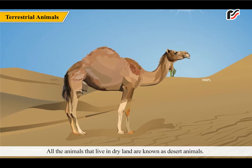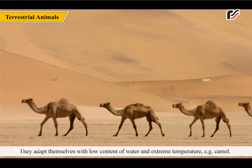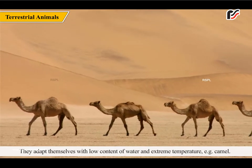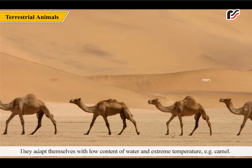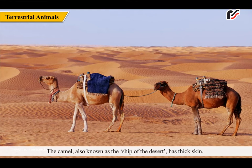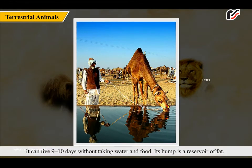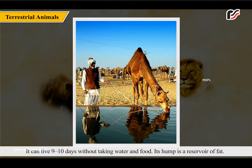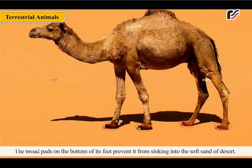All the animals that live in dry land are known as desert animals. They adapt themselves to low content of water and extreme temperature. The camel, also known as the ship of the desert, has thick skin. It can live nine to ten days without taking water and food. Its hump is a reservoir of fat. The broad pads on the bottom of its feet prevent it from sinking into the soft sand of the desert.